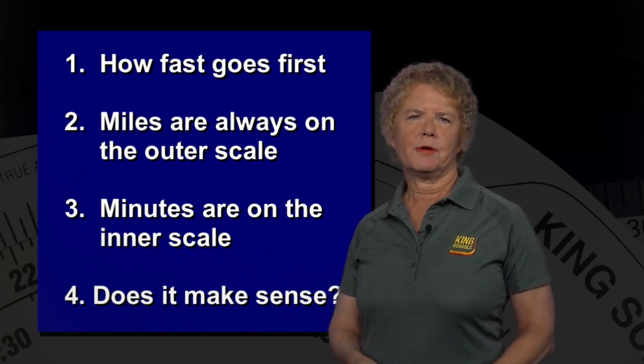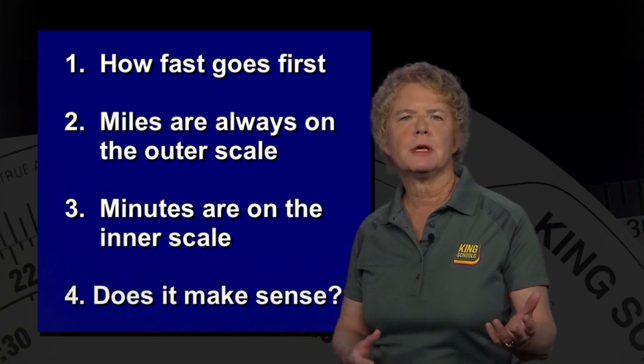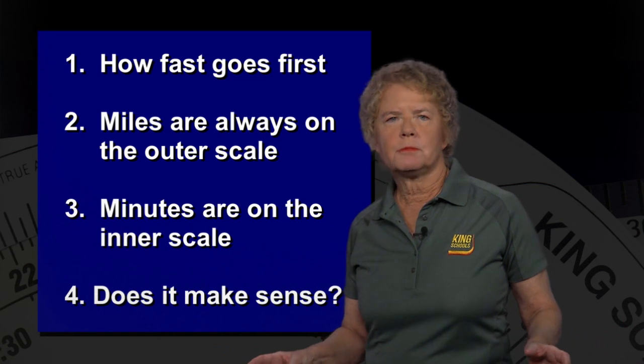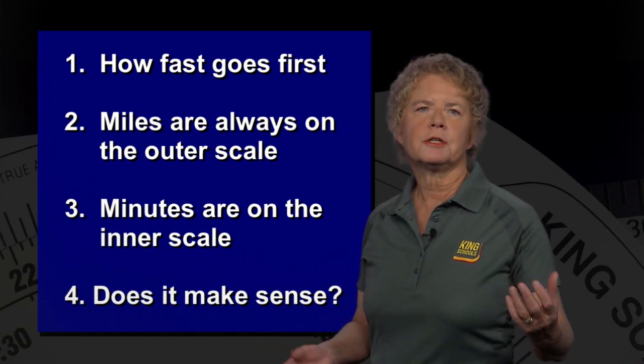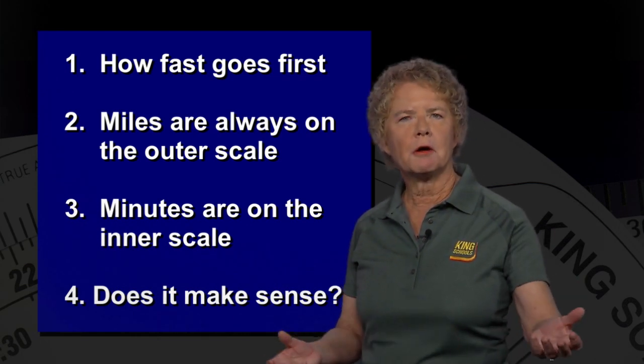Sometimes you know the how fast because you'll be told, or you will figure out that your airspeed or ground speed is, let's say, 138 miles an hour. Sometimes the way you know the how fast is you know you covered, for instance, 23 miles in 10 minutes. And that tells you how fast you're going.